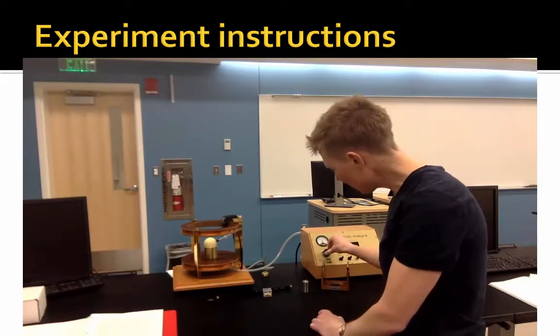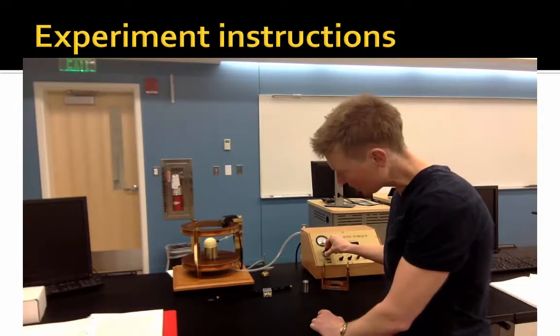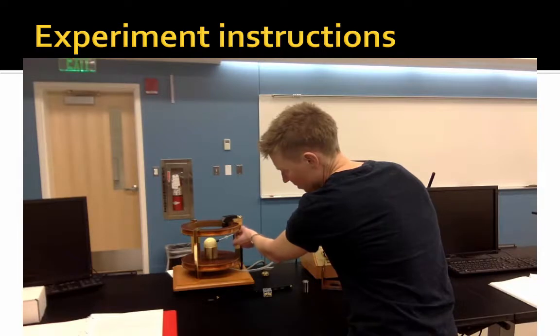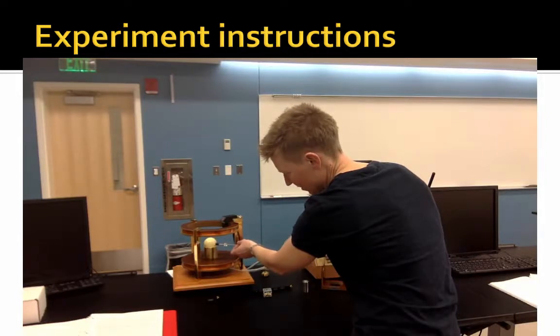So your first job, the first experiment, is to balance the gravitational torque with the magnetic torque. And it will take a little bit of fiddling. You may have to position it, hold it a little bit with your hand, keep it from spinning around, but you'll get there.